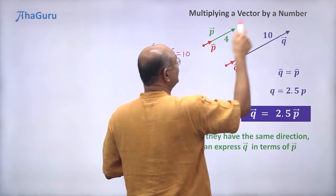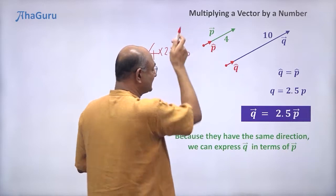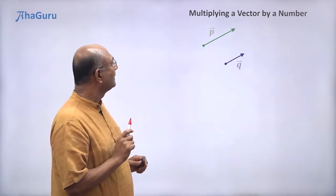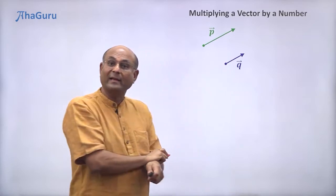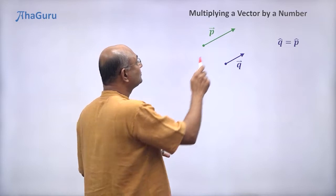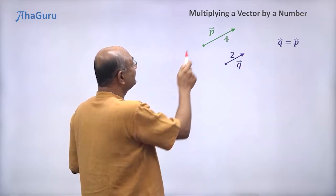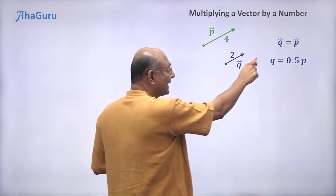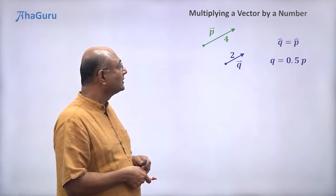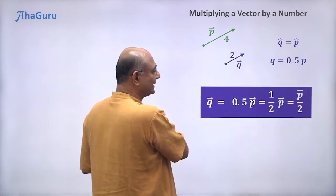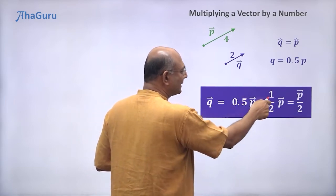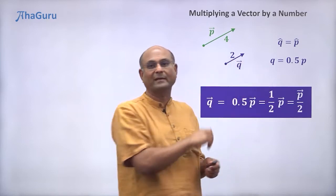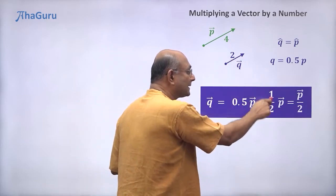This fellow's length is 2.5 times that fellow's length and the directions are the same, so we can express q vector in terms of p vector. Now look at this case where q vector is smaller than p vector — can I still write q vector in terms of p vector? Yes. The directions are the same, and if p is 4 and q is 2, then q magnitude is half of p magnitude — 0.5 times p. So q vector is 0.5 times p vector, which we can also write as half p vector or p vector divided by 2.